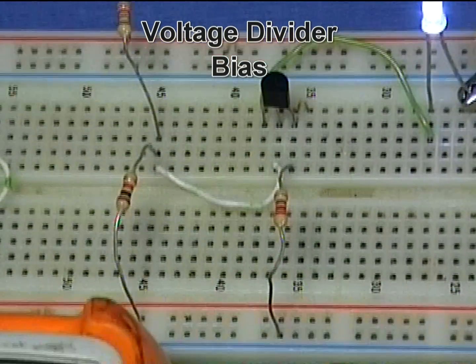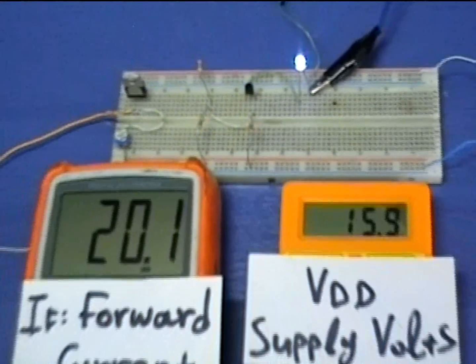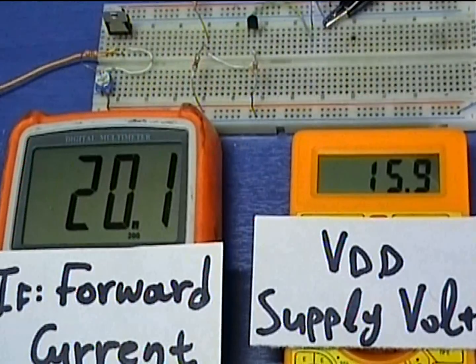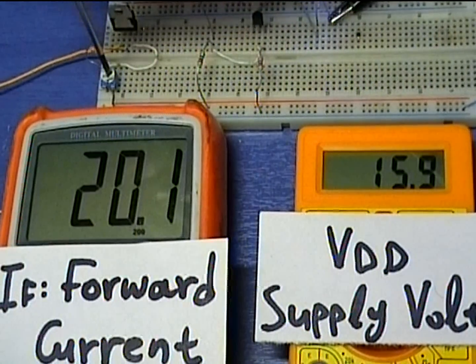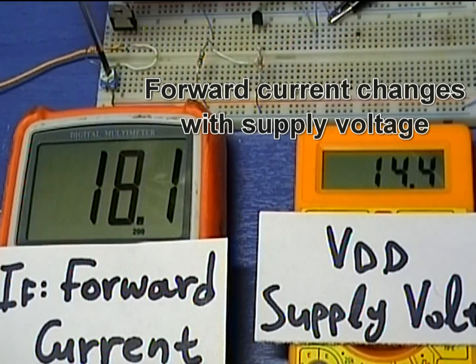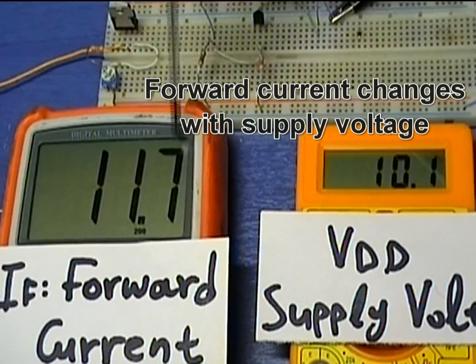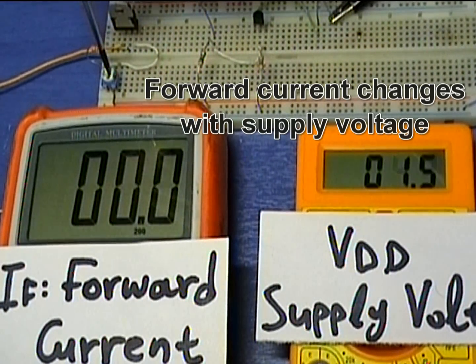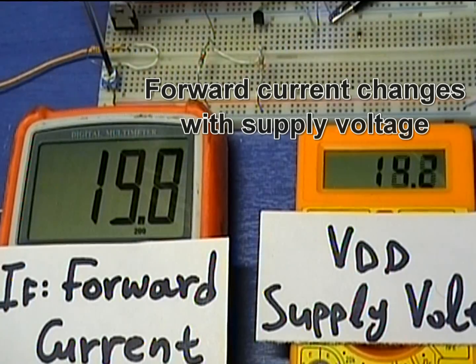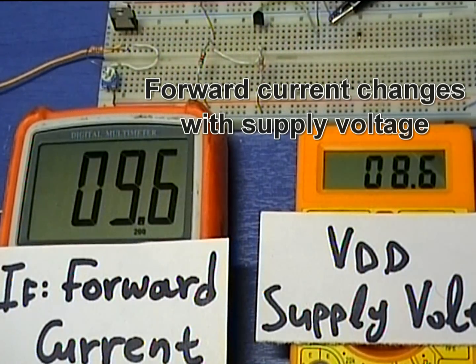The problem with the previous circuit is that the base voltage depends on the voltage divider ratio and the power supply voltage. If the power supply is changed, then the base voltage will change and therefore the current through the LED will change as well, and we don't want this to happen. To solve this problem, we need something to maintain the base voltage stable, regardless of the supply voltage.